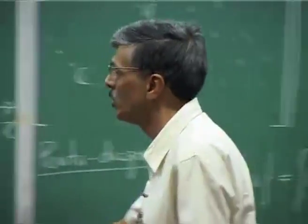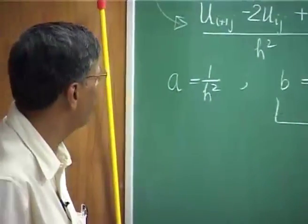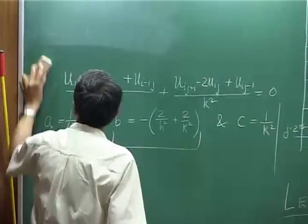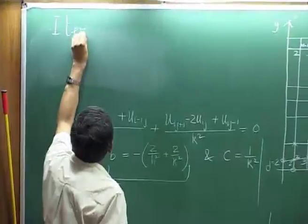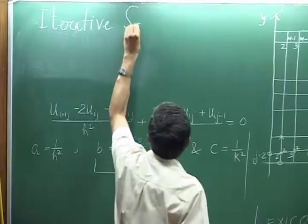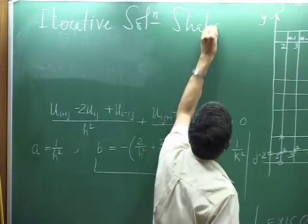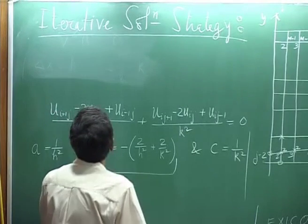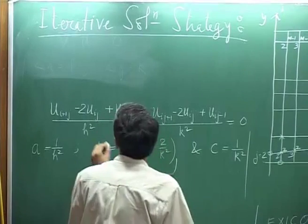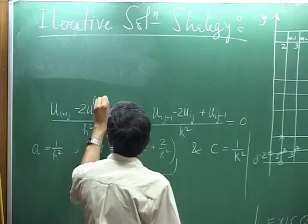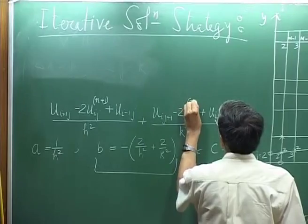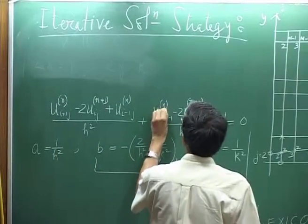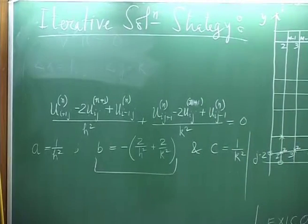We do not try to solve it like A inverse R — that is what Gaussian elimination tries to do. It basically gets you the inverse of the matrix, but as I told you, the inversion or elimination operation is proportional to N³ and that is a very arduous task. Instead, what is done historically and even today is to do it in a sort of iterative manner. So what we try to do is not a direct solution, but an iterative solution strategy.